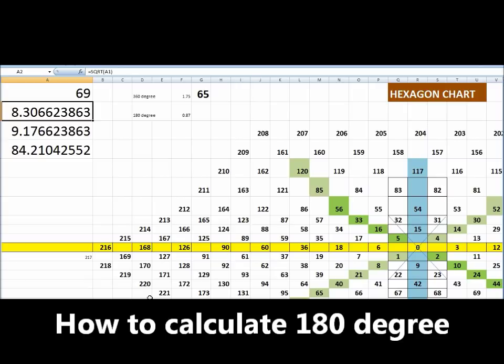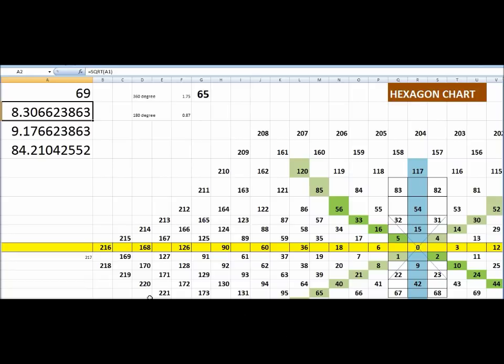Now let's understand how to calculate 180 degrees. You can see in the center, 22 is opposite to 31. I have made a cross - on one side of zero is 22, on the other side is 31. On one side is 23, on the other side is 32. They are just opposite to each other, means they are at 180 degrees.